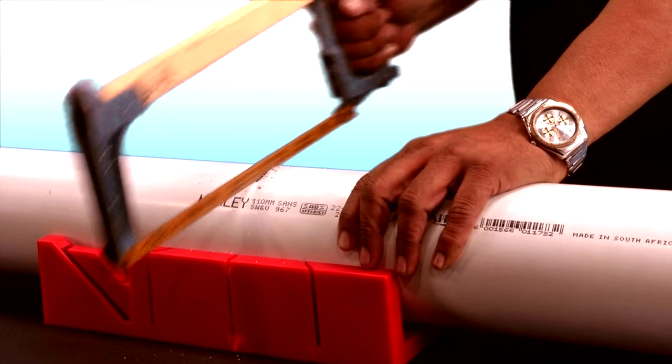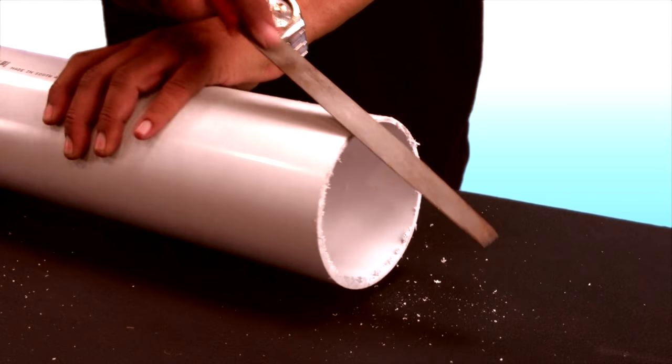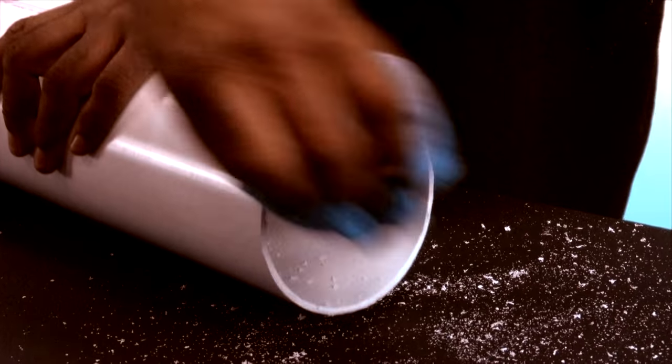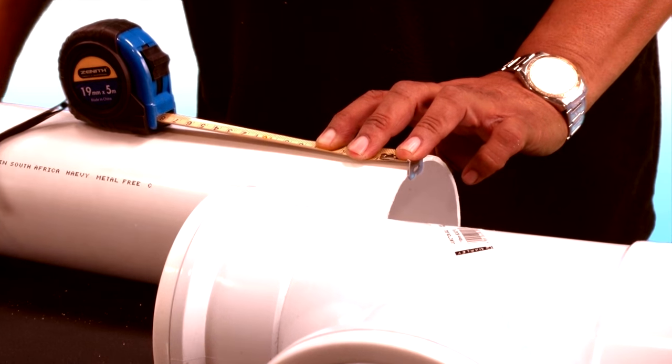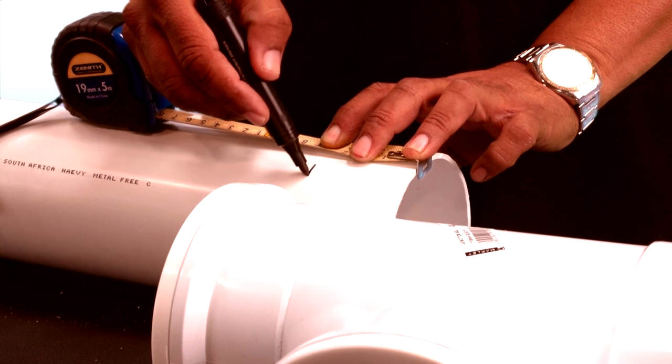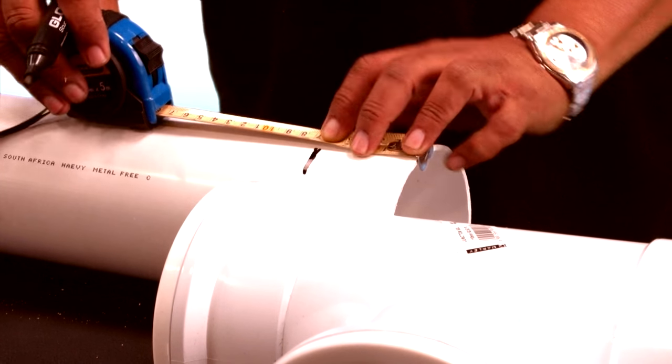Cut the pipe, as previously mentioned, chamfering the ends and removing all swarf and dirt. Like with the underground fittings, measure and mark the insertion depth.